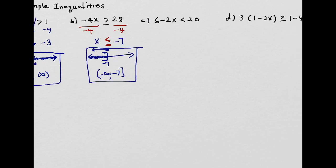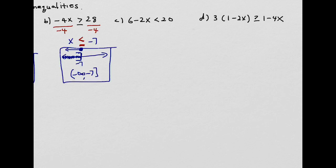Let's do another one that's a little longer. Solving means isolate the variable. First, get rid of addition or subtraction before multiplication. Get rid of the positive 6 by subtracting 6 from both sides, giving negative 2x is less than 14. Then divide by negative 2 — since you're dividing by a negative, you change the inequality sign from less than to greater than. The result is x is greater than negative 7.